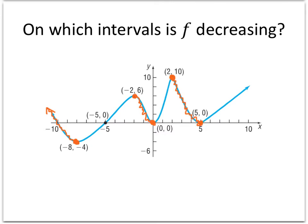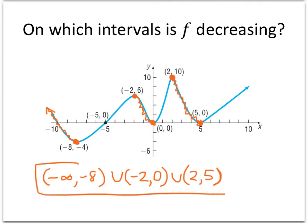So our answer here is that the function is decreasing from minus infinity up to negative 8. Again, we're always referring to x values here. And then it's decreasing again from x equals negative 2 to x equals 0. And then one more time from x equals 2 to x equals 5. If we want to put those all together into one big set, we put unions in between. And there is our answer.